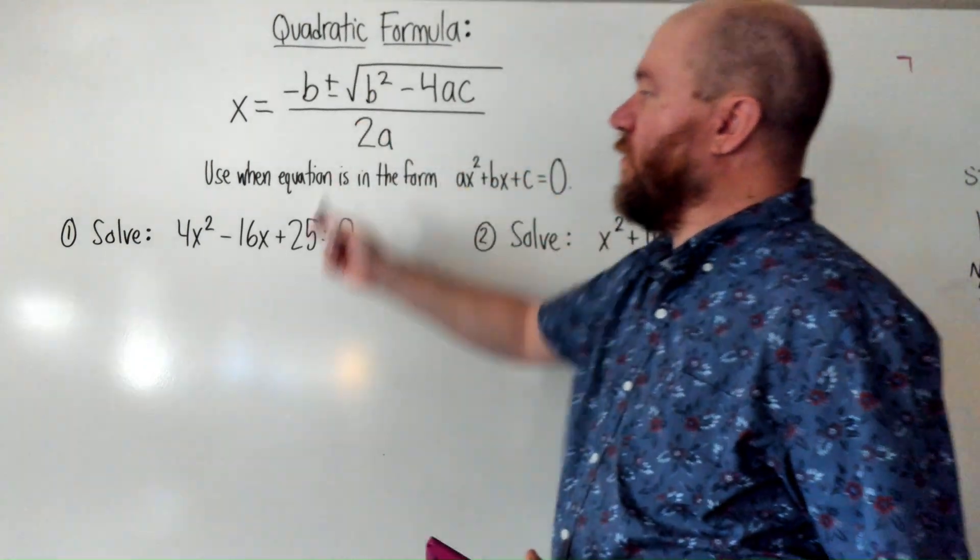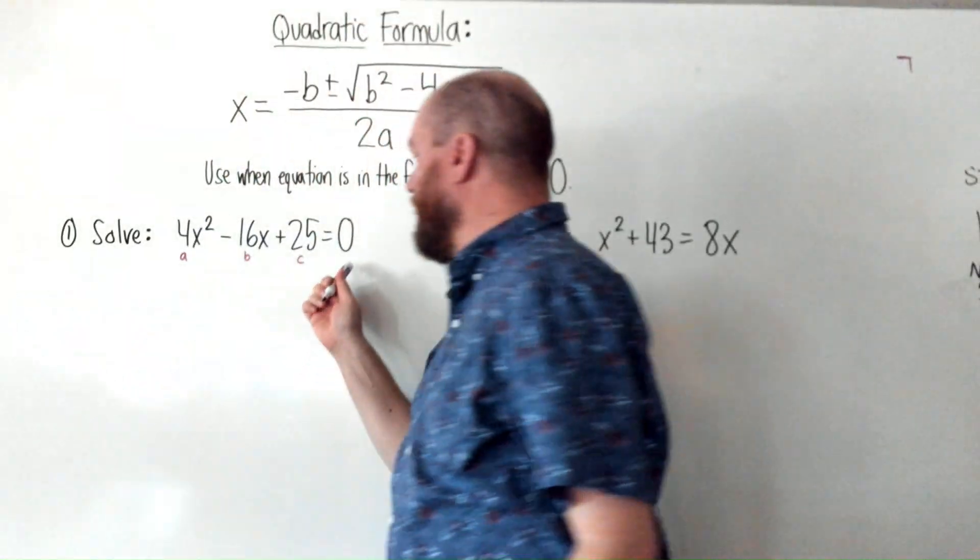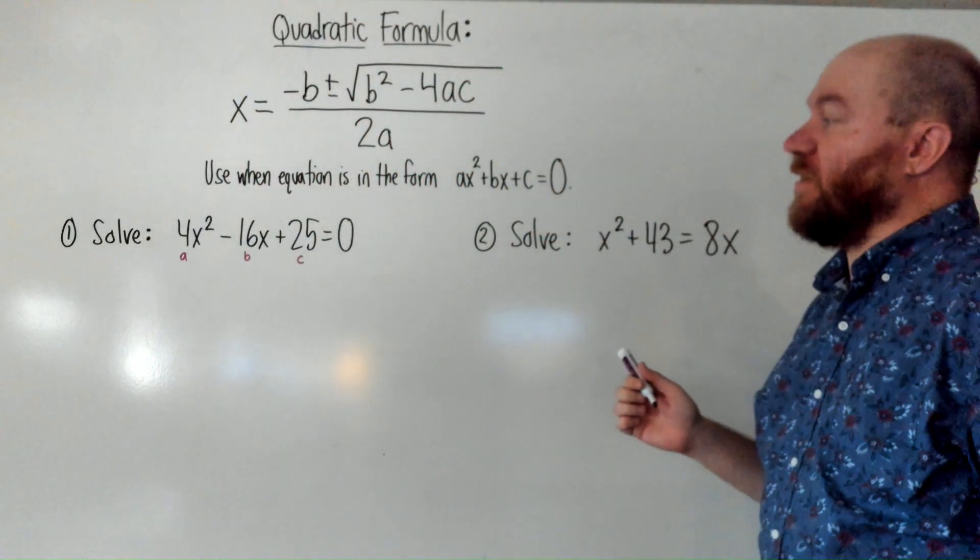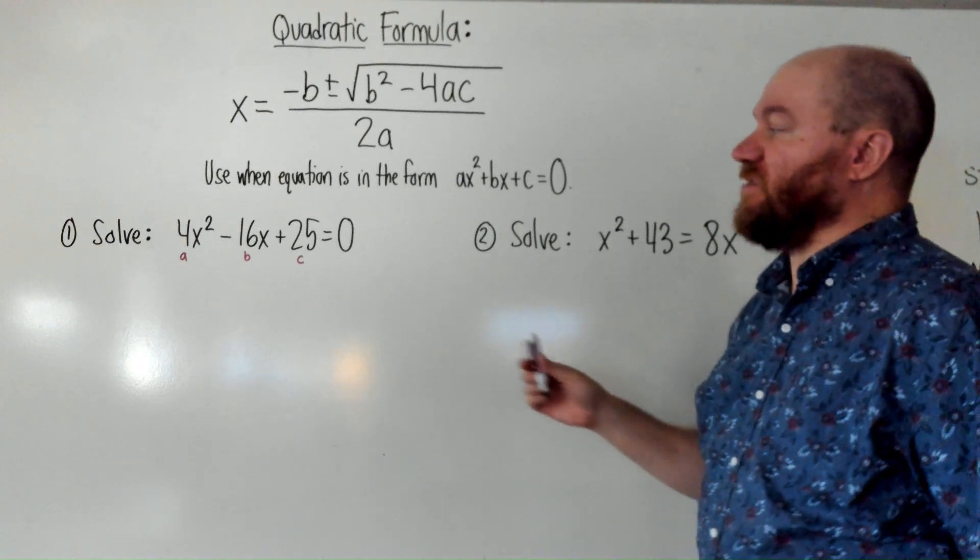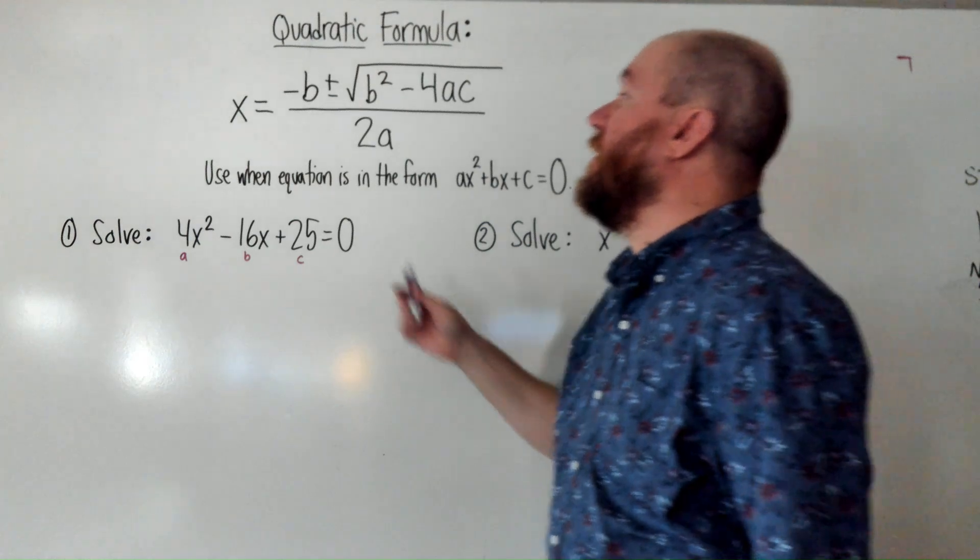We're going to use the formula, using this as an A, and this as a B, and this as a C. Luckily, the question they gave us is already equal to 0. The formula can only be used when it's in standard form. And so, let's plug in everything.